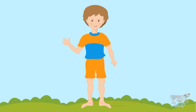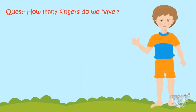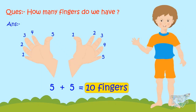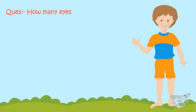Now kids, let's answer a few questions. How many fingers do we have? We have five fingers in one hand. Let's count: one, two, three, four, five. And five fingers in the other hand. Five plus five is ten, so we have ten fingers in all.